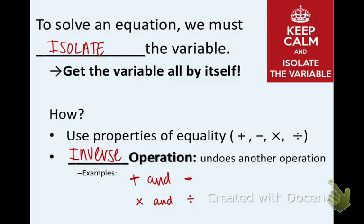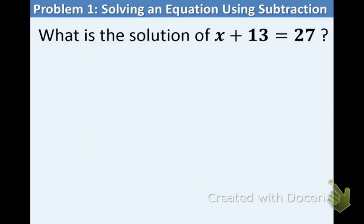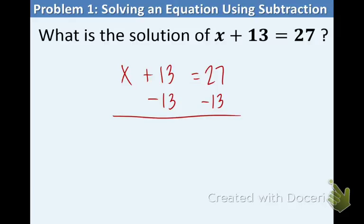Feel free to pause the presentation at any time to catch up. Here's our first example: x plus 13 equals 27. We need to get rid of that positive 13. The opposite of adding is subtraction, so we subtract 13 from both sides — minus 13, minus 13. They cancel out, x is by itself, and 27 minus 13 is 14. So x equals 14.